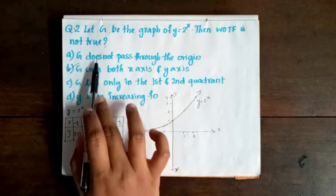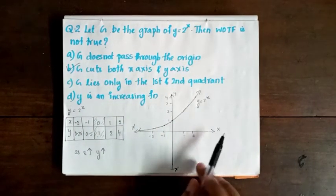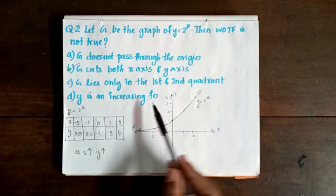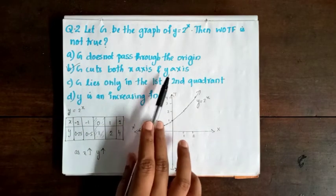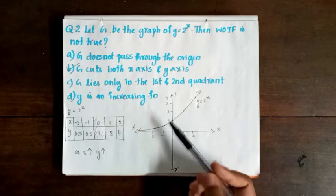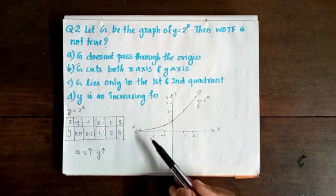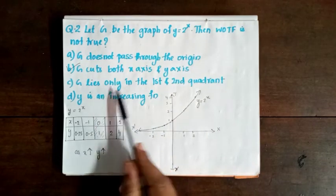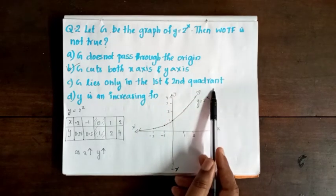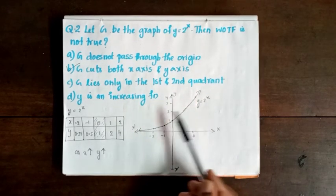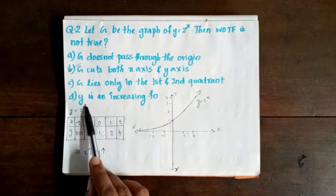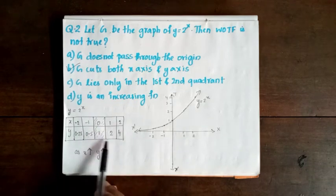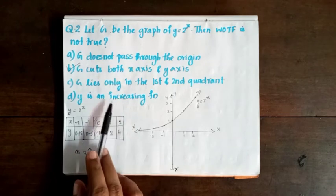First option is: the graph does not pass through the origin. That is correct — this graph does not pass through the origin. Second option is: it cuts both the x-axis and y-axis. This graph only cuts the y-axis, not the x-axis.